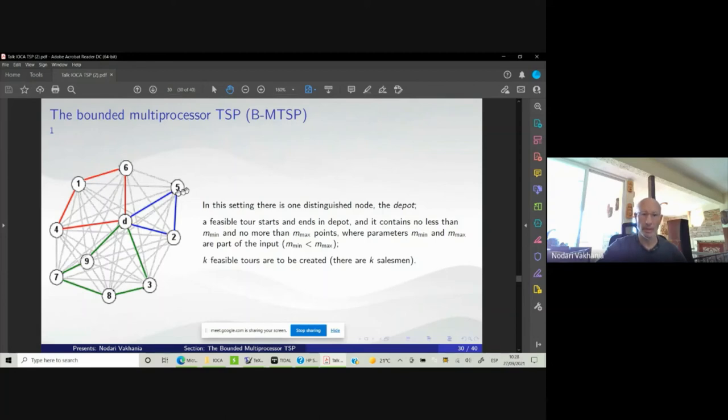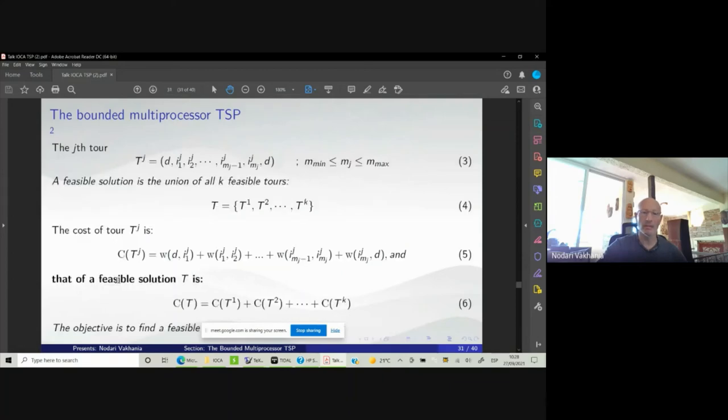Given that m min is no less than three and m max here can be maybe four or five. We represent each feasible tour this way: it starts in depot, ends in depot. This is a feasible solution that contains all these k tours. The cost is defined similarly as for the TSP problem. The total cost for the solution T is sum of these costs. The objective is to find feasible tour that minimizes the total cost, which is sum.